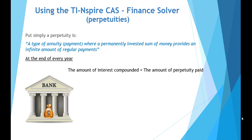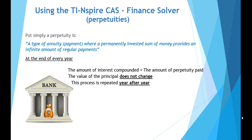You get as much out as the bank puts in, so the value of the principal doesn't change. Annuities on the other hand normally go up and down depending on whether you're investing or paying off a reducing balance loan. But with a perpetuity the main focus is that the principal remains unchanged and this process is repeated year after year. For example, you may earn $100 interest, that's paid as a perpetuity at the end of the year, and the principal remains the same.